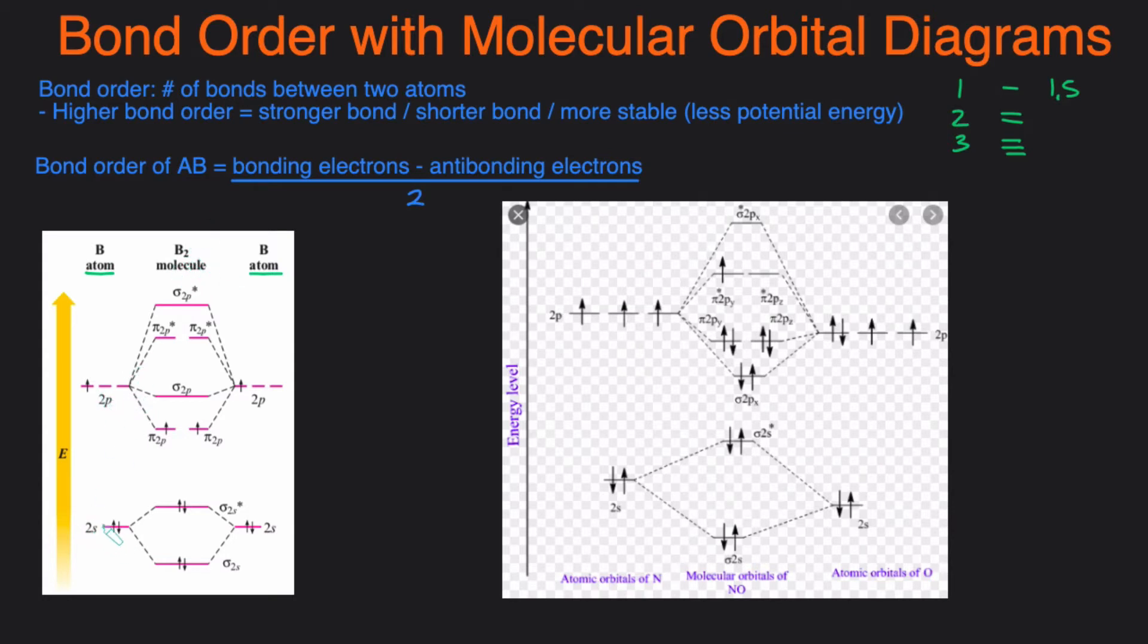So you have your atomic orbitals right here. Your S's, your P's, and then also your atomic orbitals for this boron on the right hand side. And in the middle are the molecular orbitals, so those are the orbitals that are formed when the two atomic orbitals overlap. So you just think of the molecular orbitals as the orbitals belonging to the molecule.